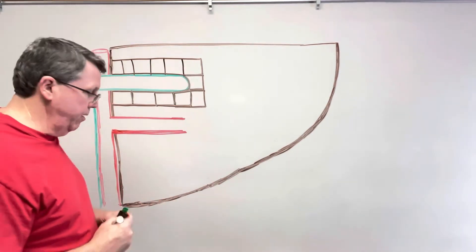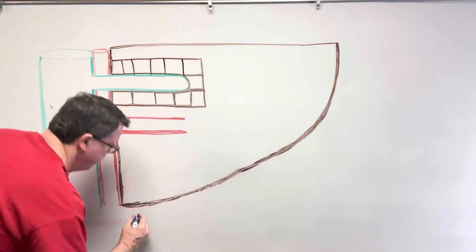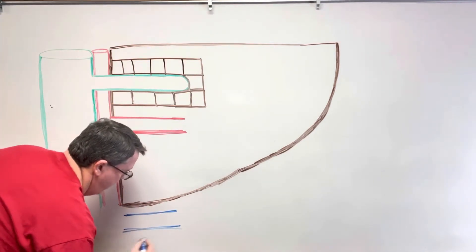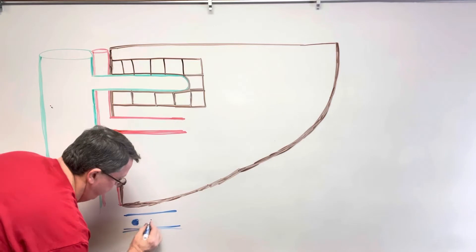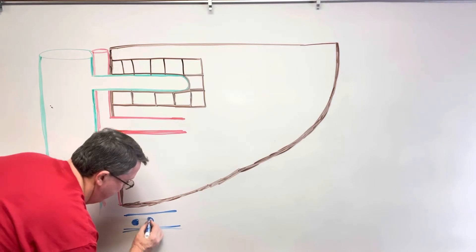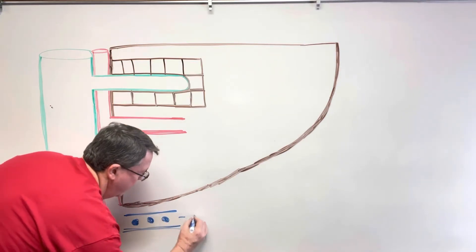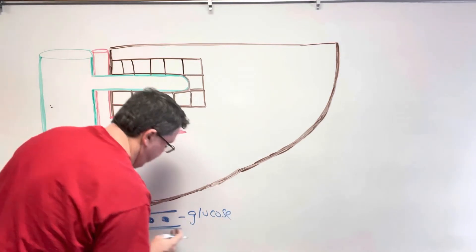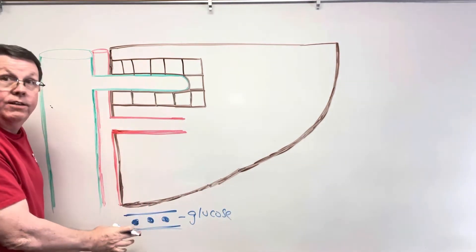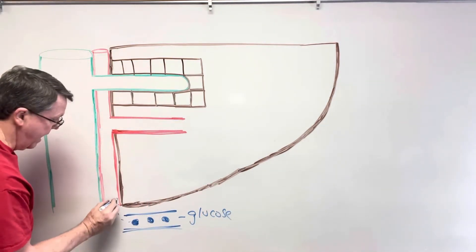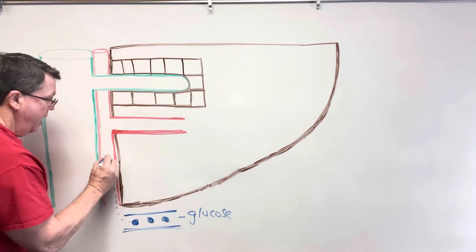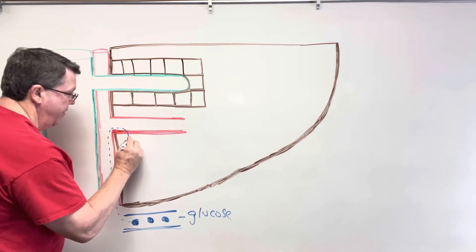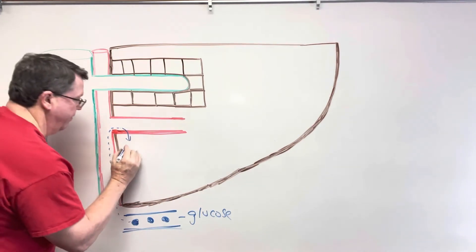The first thing that thyroid hormone is going to do is help with increasing the amount of glucose that is absorbed in the intestines. Here are my glucose molecules in the intestines — they're going to come out, travel in the bloodstream up to the liver, and then enter into the liver.